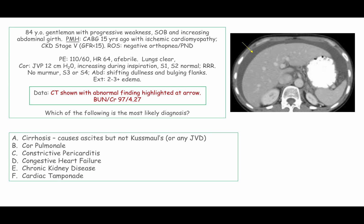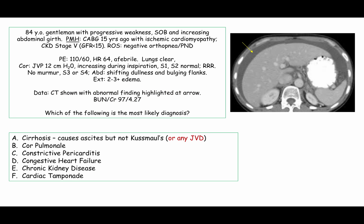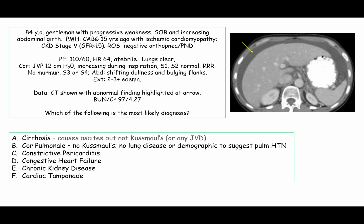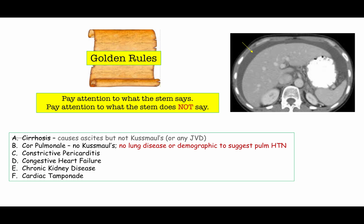Just quickly perusing the data in this question, it supports what we already know from reading the question stem. Whereas cirrhosis will be the most common cause of ascites, it is not associated with Kussmaul's or any JVD. When JVD is present, you need to think about cardiac etiologies. This is one of the golden rules to answering test questions: when analyzing options, pay attention to what the stem tells you, and pay attention to what the stem does not tell you.